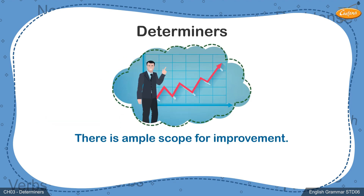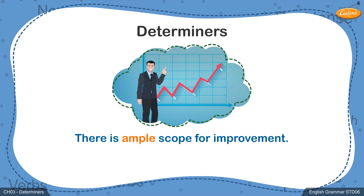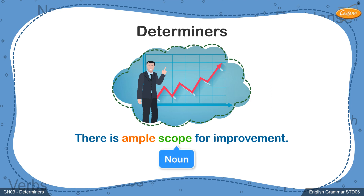Let's consider some examples. There is ample scope for improvement. In this sentence, the word 'ample' describes and tells us more about the scope we have for improvement. Hence, the word 'ample' tells us more about the noun 'scope' and helps us add more meaning to the noun. Notice how the word 'ample', which is an adjective in this sentence, precedes or comes just before the noun 'scope'.